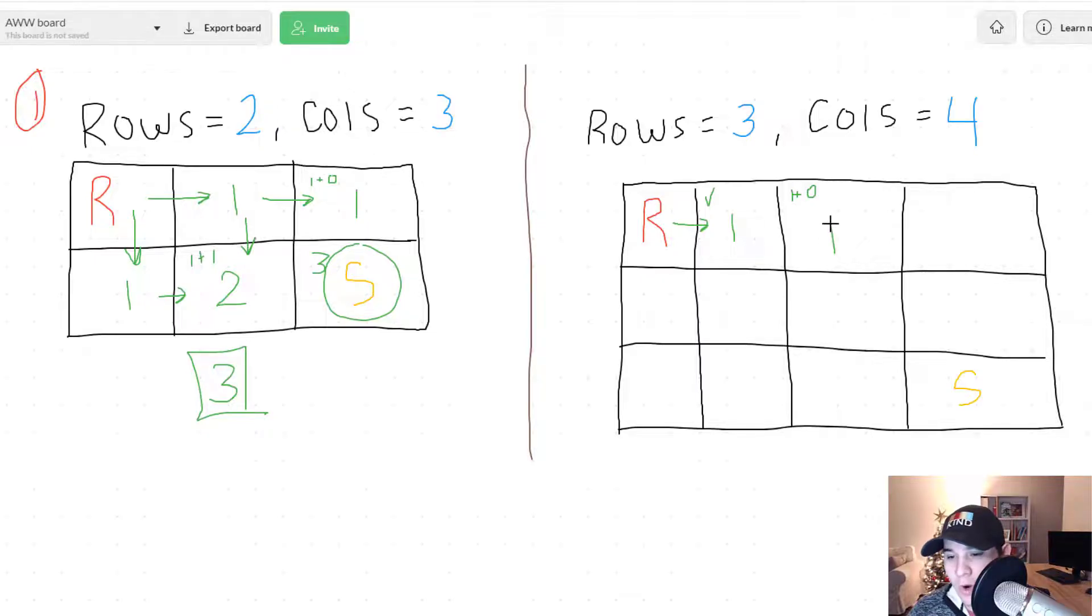So that means we have one unique path to get here. Same thing for here we do one plus zero. So this would be one. And now right here the robot can go down. And so that's just one because there's no other path that can get to this box other than just going down.